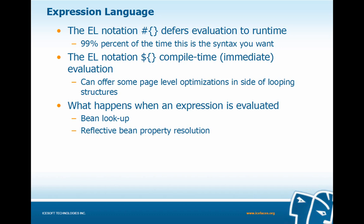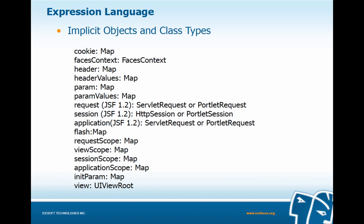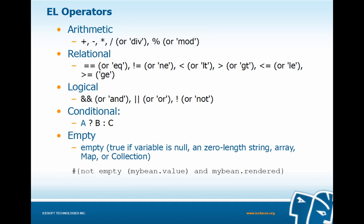When an expression is evaluated, there is a bean lookup and a reflective bean property resolution. JSF defines various implicit objects and class types — for example, the FacesContext, which contains all per-request information related to the processing of a single JSF request, essentially a window into all things JSF. We also have header maps, parameter maps, and various other objects and class types. We can use operators in our expression language: arithmetic, relational, logical, conditional, and empty. At the bottom of our screen, we have an EL expression using some of these operators with a rendered attribute.